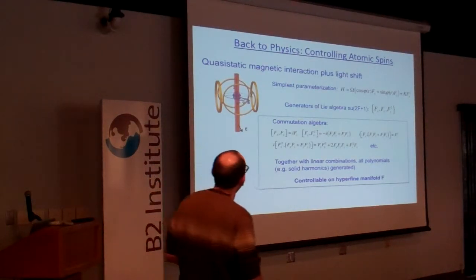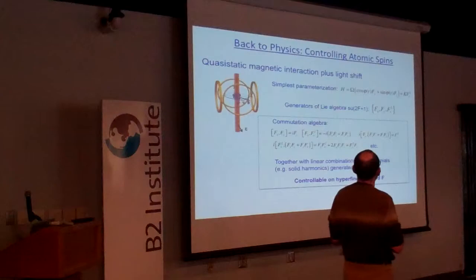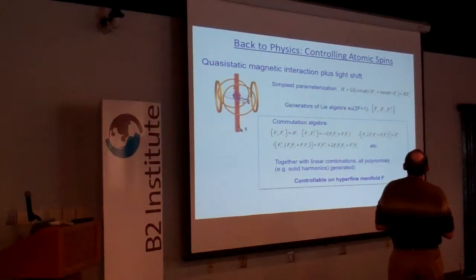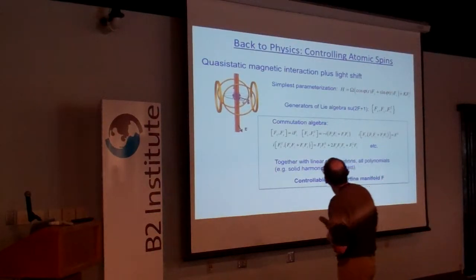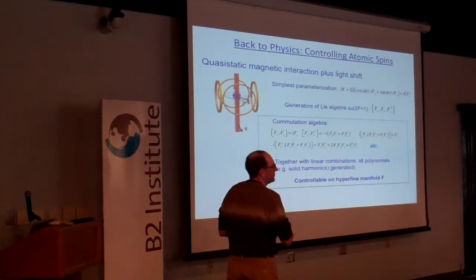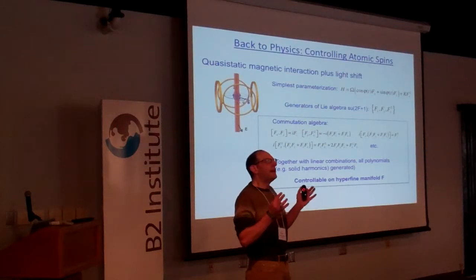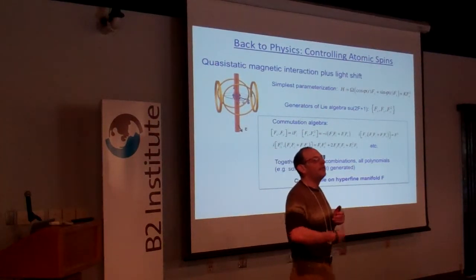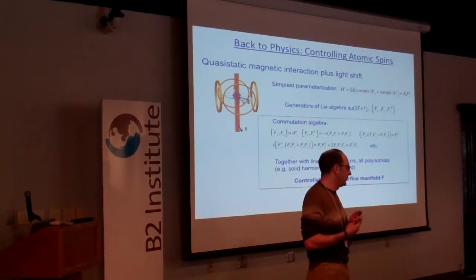But the thing is, you have an infinite number of commutators. So how do you know how close you can get to a particular unitary transformation? Well, for a given F, the dimension is finite. So eventually these commutators come back to themselves.